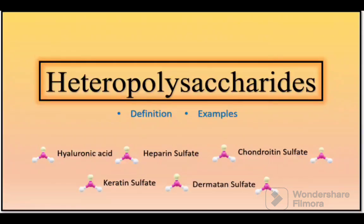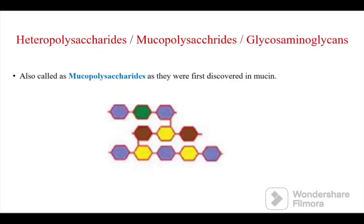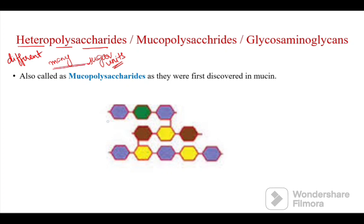In this video we will see the definition and examples of heteropolysaccharides. 'Hetero' means different, 'poly' means many, and 'saccharides' means sugar units. Heteropolysaccharides are a type of carbohydrate made of many sugar units, and these sugar units are all different in nature — that is why they are called heteropolysaccharides.